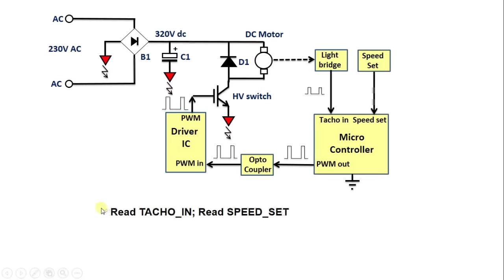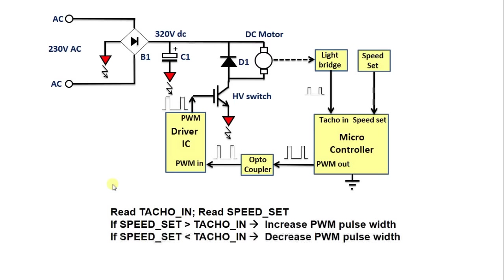First we read tacho in and the speed set signal. If speed set is higher than tacho in, we increase the PWM pulse width. If speed set is lower than tacho in, we decrease the PWM pulse width. Then we return to the beginning.